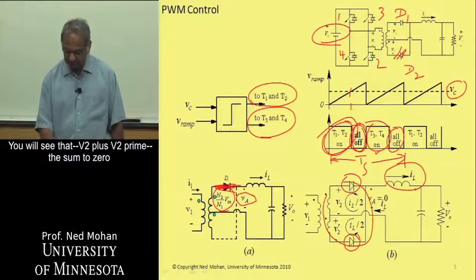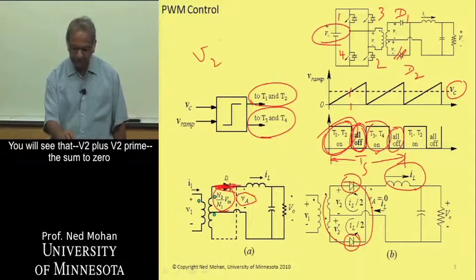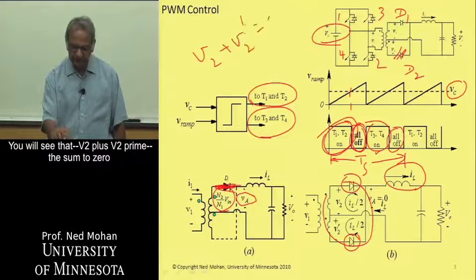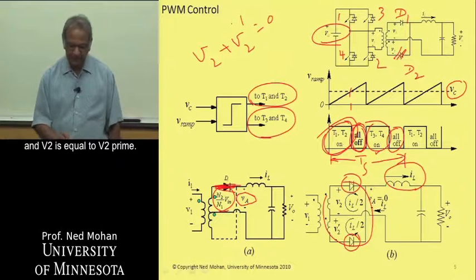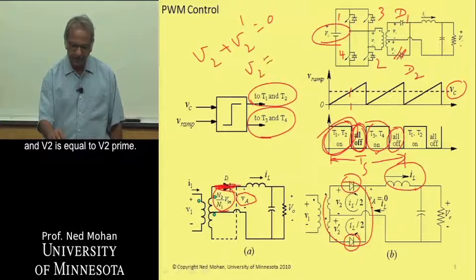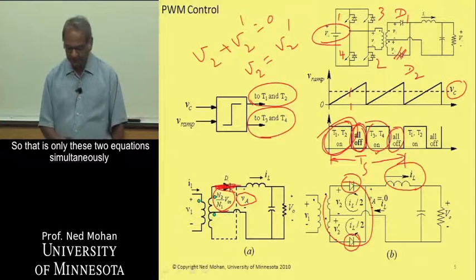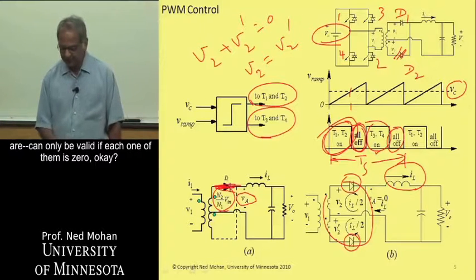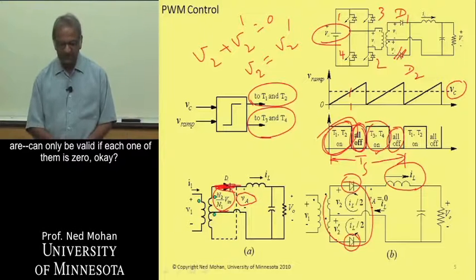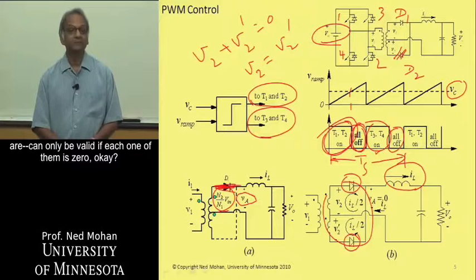if you apply Kirchhoff's voltage law in this loop here, in this loop, you'll see that V2 plus V2 prime, they sum to 0, and V2 is equal to V2 prime. So that is only, these two equations simultaneously are,